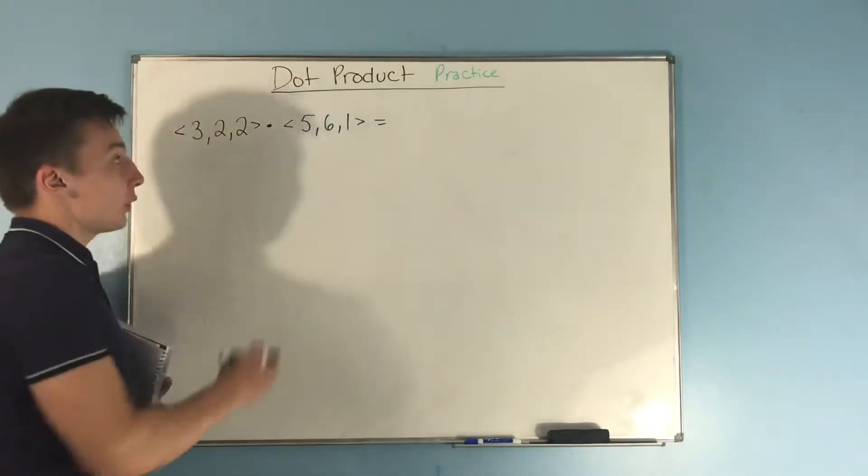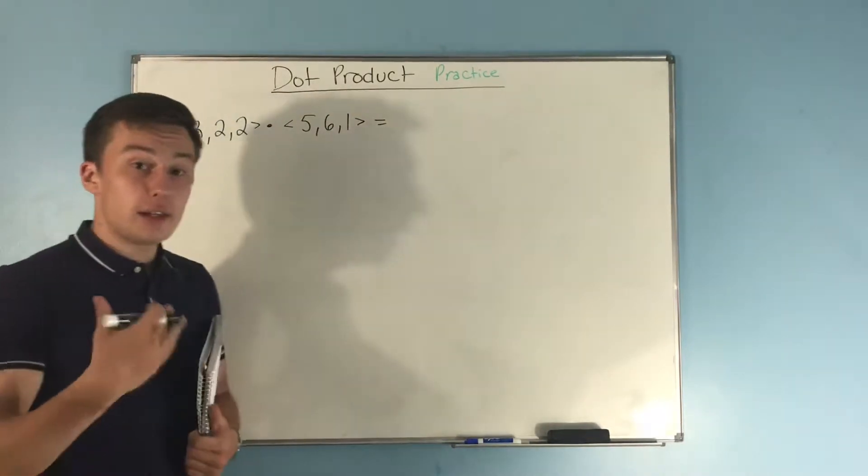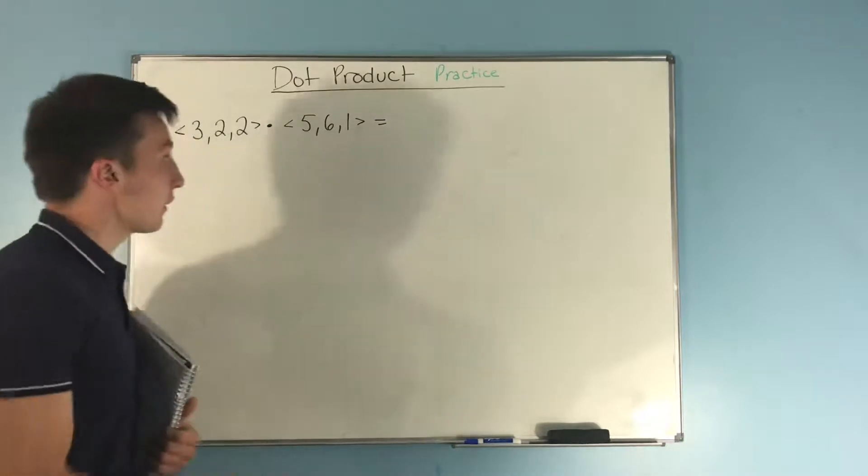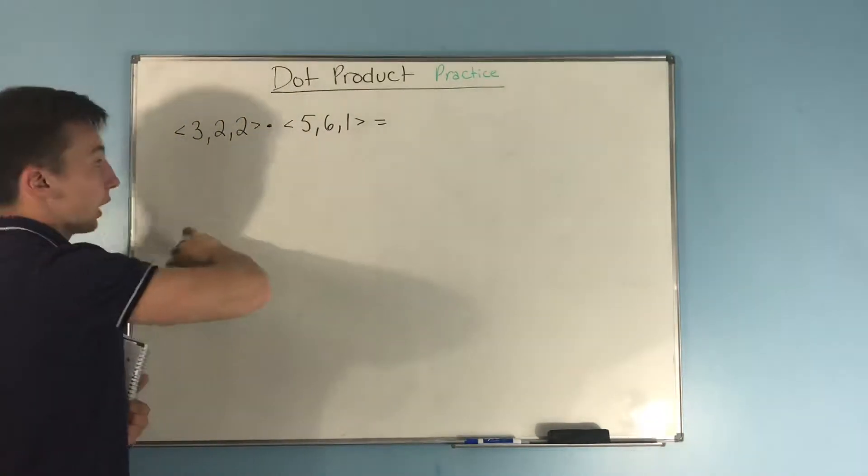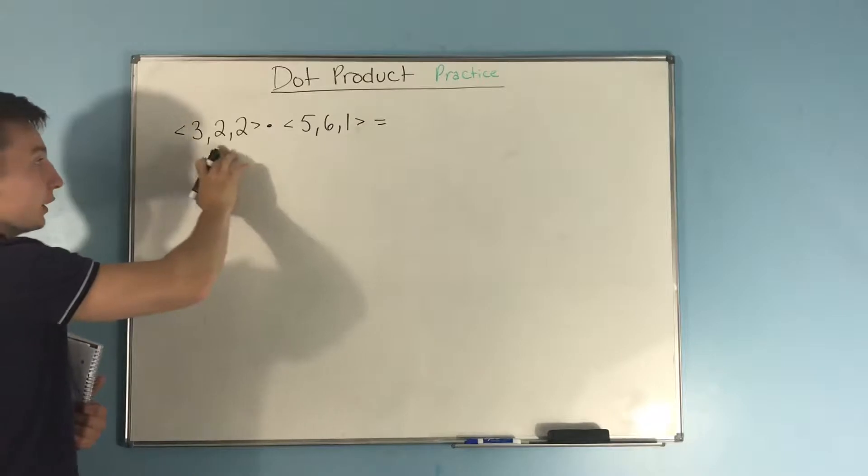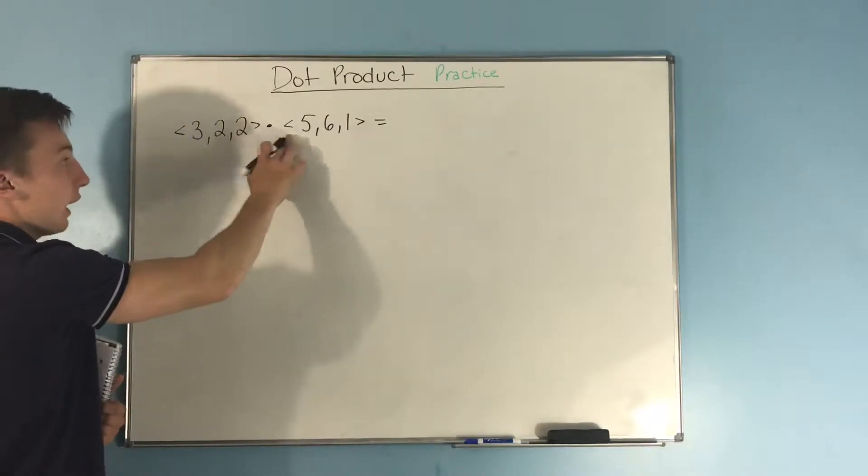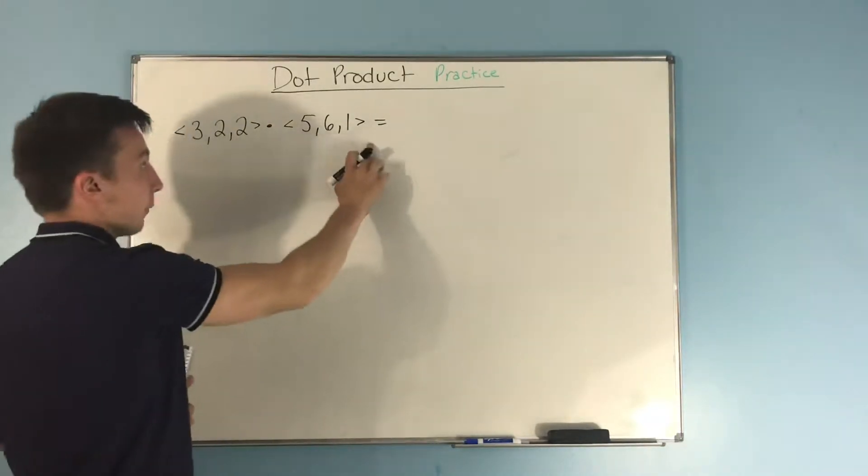All right, so in this video we're going to be doing some practice with finding the dot product. So we want to find the dot product for these two vectors. What we have written up here is the vector 3, 2, 2, and we're dotting that with 5, 6, 1.